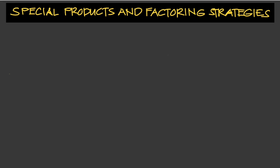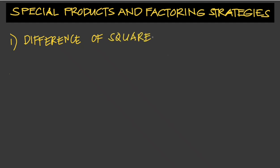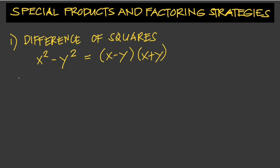The three special products involving squares: first is the difference of squares. We can write this as x squared minus y squared, which is equal to x minus y times x plus y.